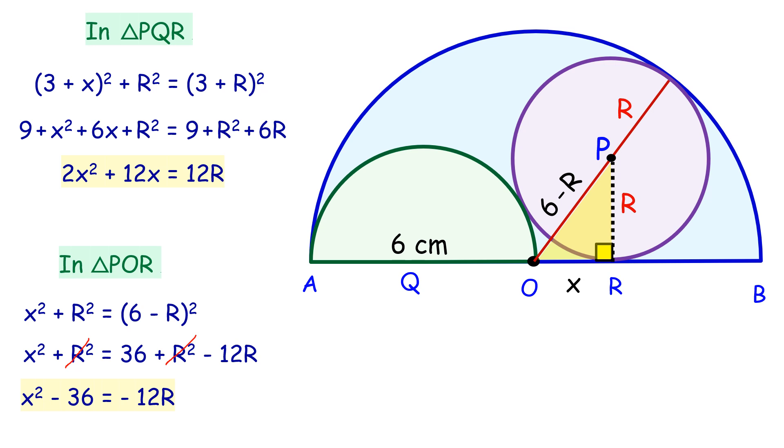Now, if we add these two yellow equations, on the right side this is 12R and this is negative 12R, so both will cancel each other. On the left side we have 2X² plus X². That will give me 3X² + 12X - 36 = 0. This is a quadratic equation.